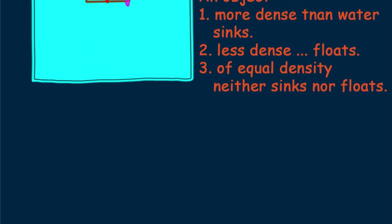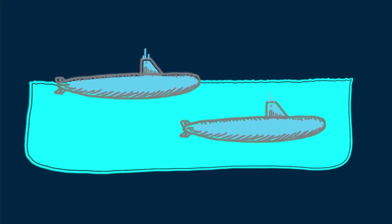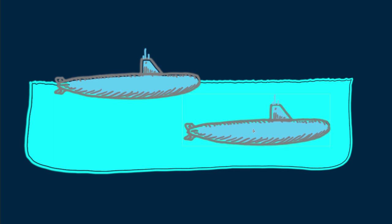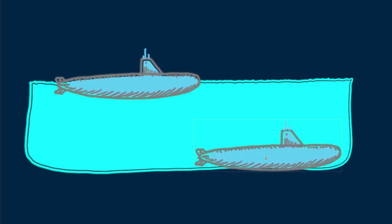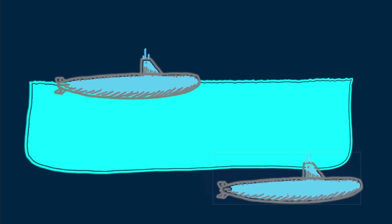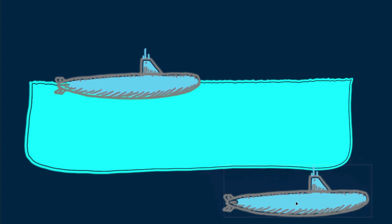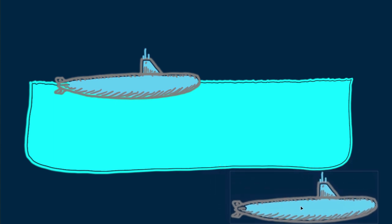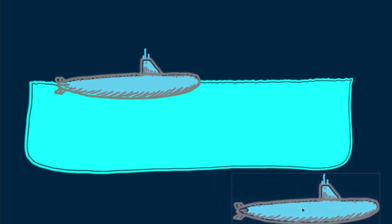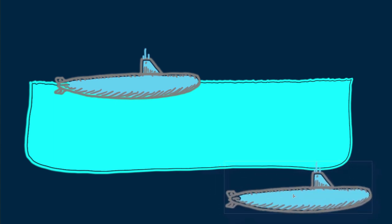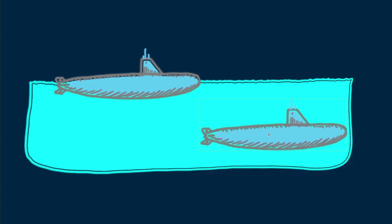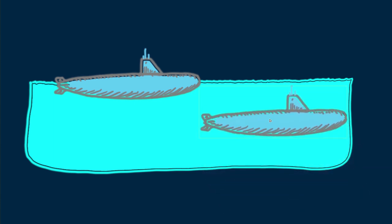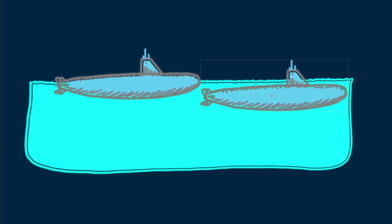Let's look at changes in density. In the previous screencast, we saw how a submarine changes its density by changing its weight. With ballast tanks filled with water, its weight and consequently its density increases. And once submerged, it becomes lighter by blowing water out of the ballast tanks, becomes less dense, and rises. It can adjust its density.